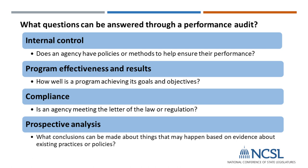When looking at program effectiveness and results, we could look at standards the agency may have in place or that may be in statute. These could be output standards — how many people received a certain brochure — or outcome standards — how many people completed their GED. If the agency doesn't have its own standards, we can look at federal standards, standards that other states with similar programs use, or best practices established by experts. We're collecting, compiling, analyzing, and reporting data to measure performance.